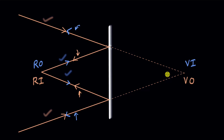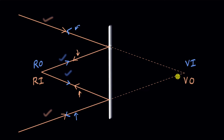To quickly summarize: a virtual object occurs whenever an optical element — a mirror or a lens — comes in the way of converging rays. The point where the rays would have converged if there was no optical element is called the virtual object.